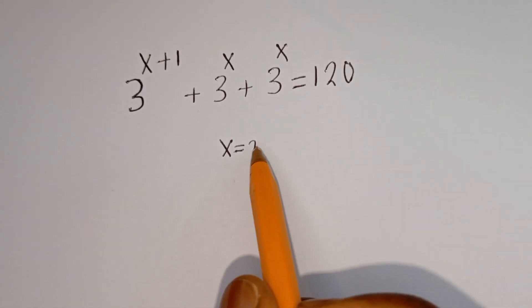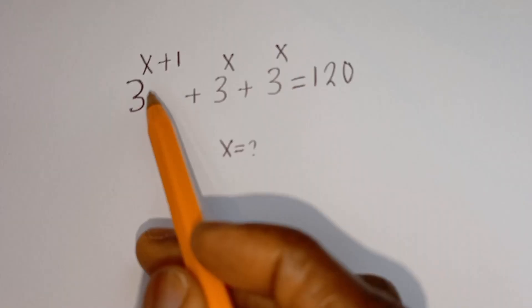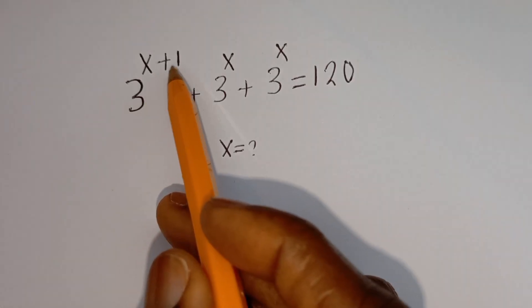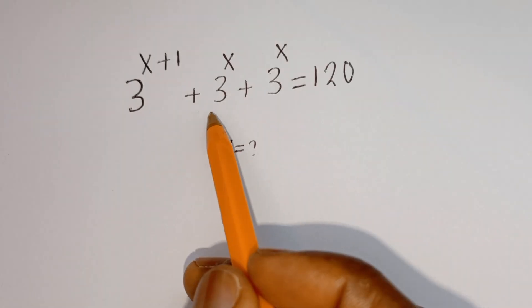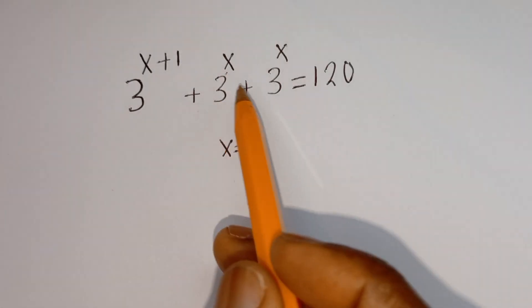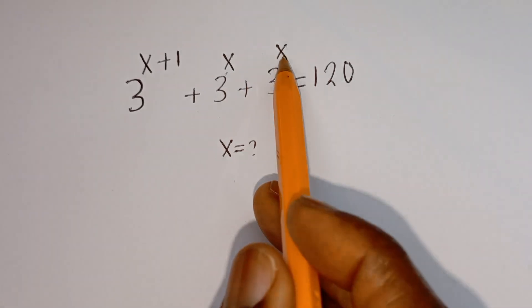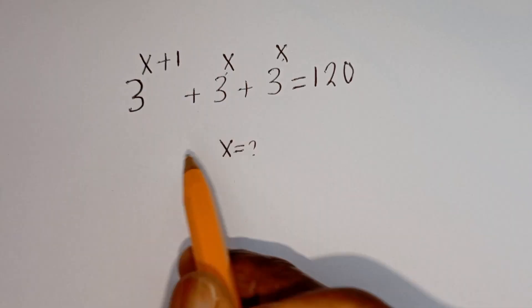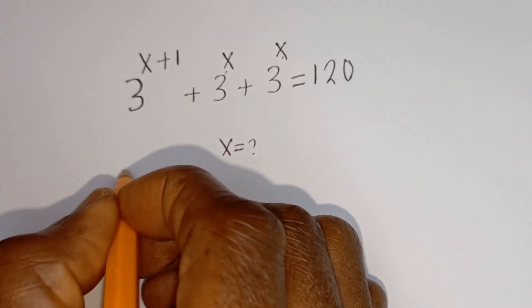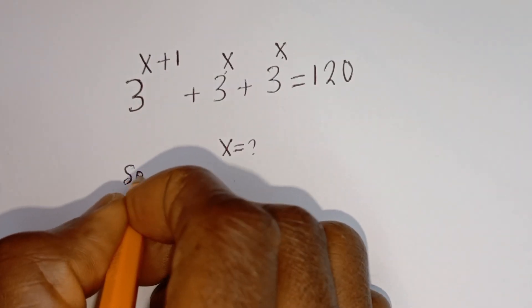Hello. How to solve for S in this equation: 3 to the power of S plus 1, plus 3 to the power of S, plus 3 to the power of S is equal to 120. Solution.